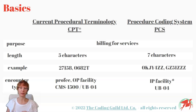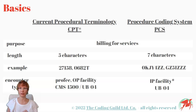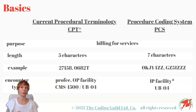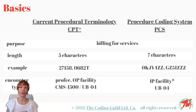The encounter type and place of service differ for the two code sets. CPT is for professional fee and outpatient facility charges on the CMS-1500 and UB-04 claim forms, while PCS codes are mainly for inpatient facility charges on the UB-04. Some outpatient departments also use PCS codes for tracking and utilization review purposes — it's not super common, but it happens.